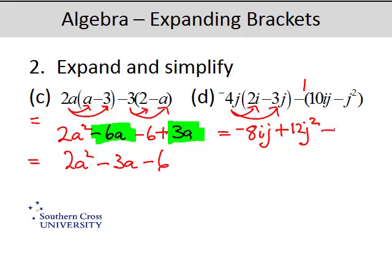Okay. Take away. Now take away one lot of 10ij. That's not a problem. But we've got a negative outside the brackets and a negative inside. So it's like a negative times a negative makes a positive. And that's j squared.